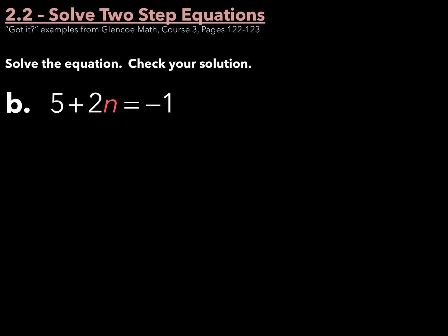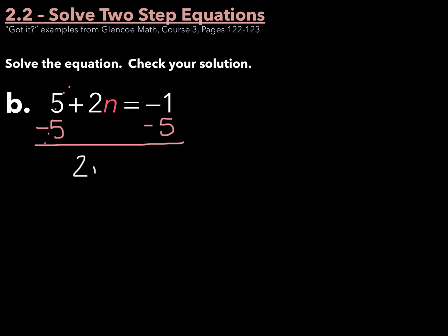Next, in Example B, we have 5 plus 2n equals negative 1. It is crucial to identify our variable, because the first step is to move this 5 from the left side to the right. So if I subtract 5 from both sides, 5 minus 5 is 0 and cancels out. For negative 1 minus 5, if you need to use keep-change-opposite to get the answer of negative 6, go ahead and do that off to the side.